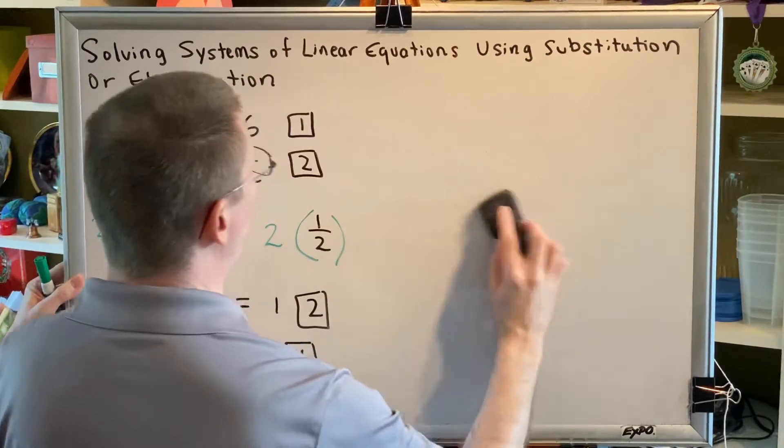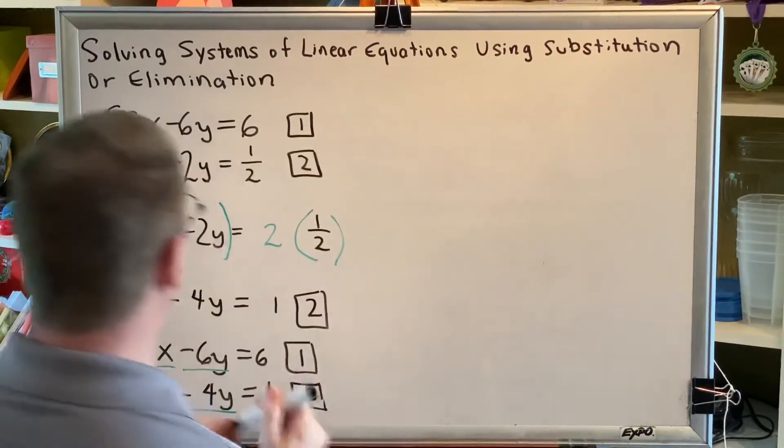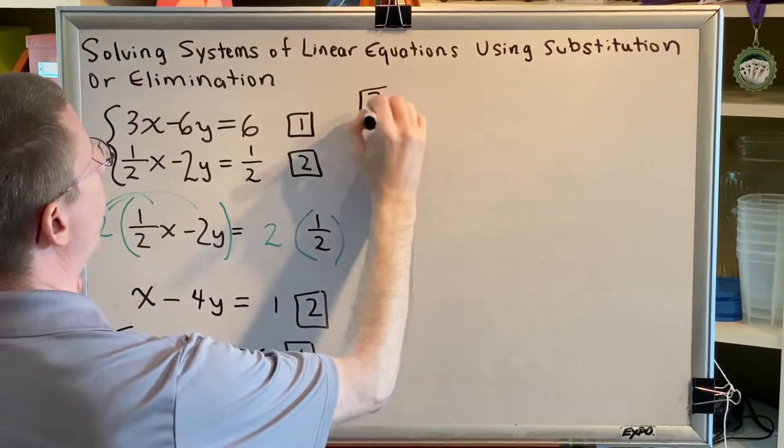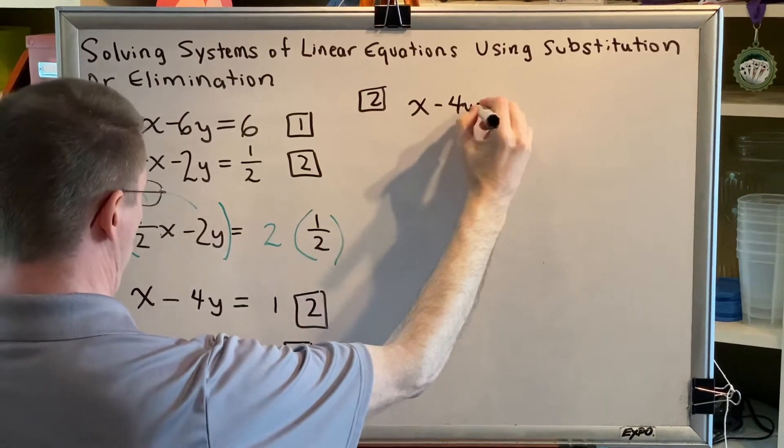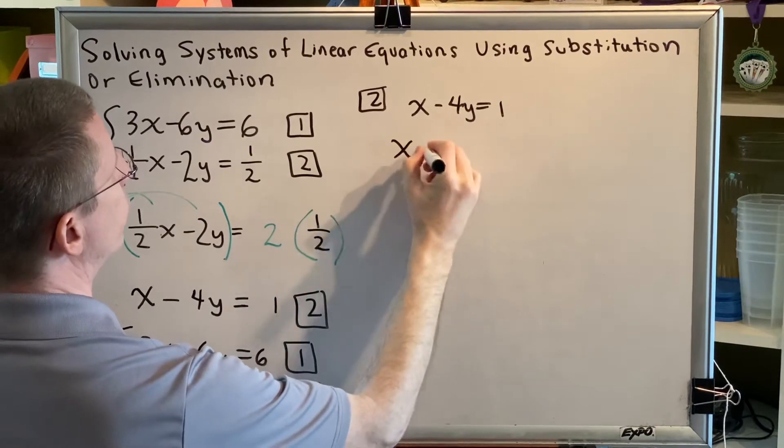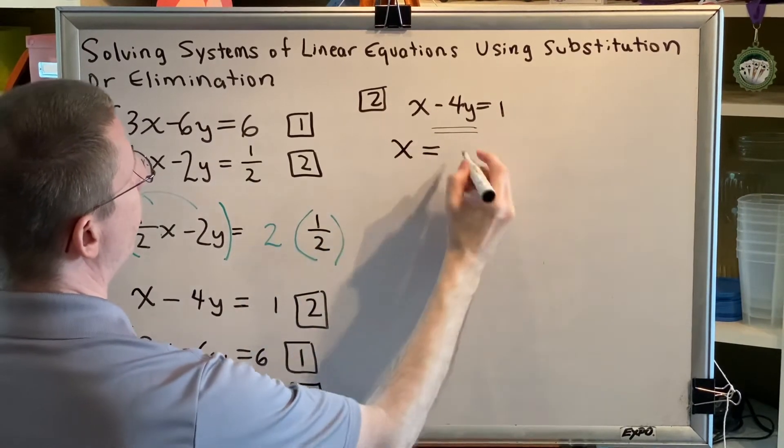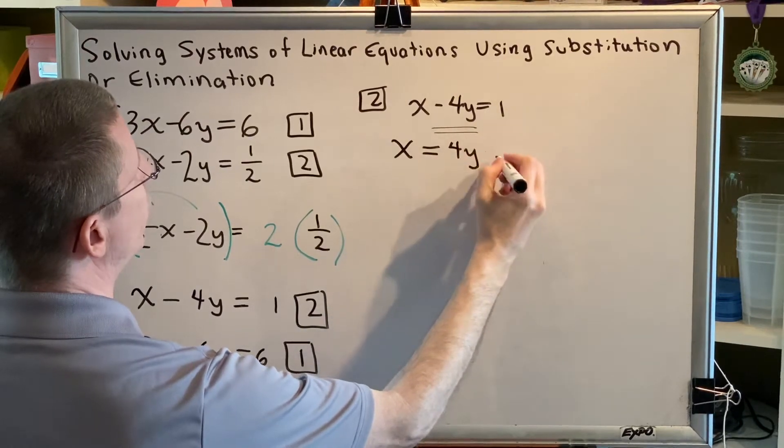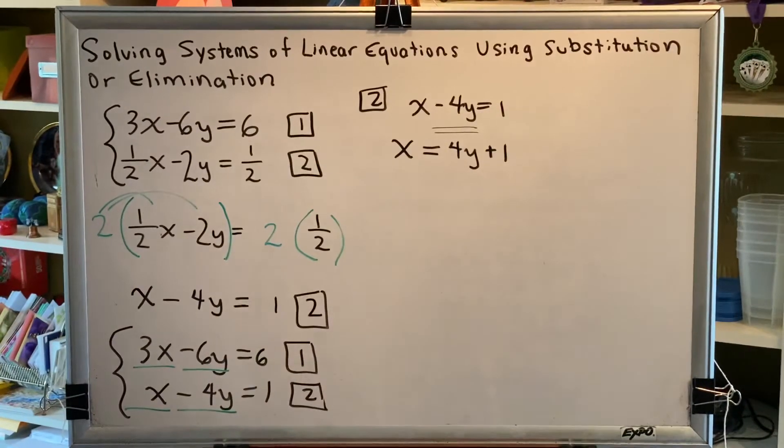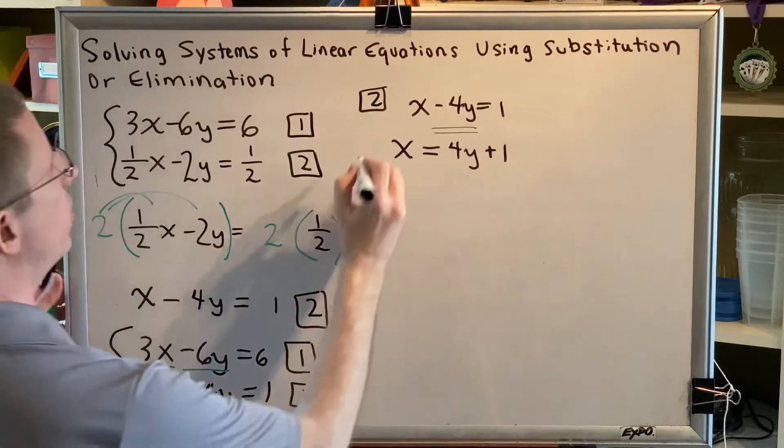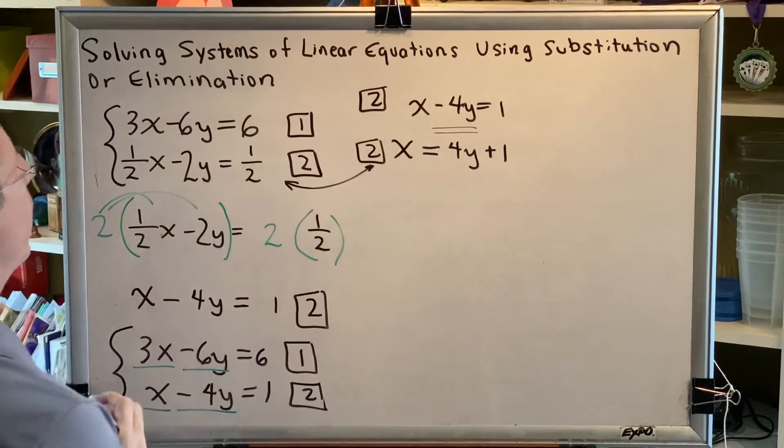And specifically, we're going to solve equation 2 for this x. Equation 2 is x minus 4y equals 1. Solving this for x is very easy. We just move our subtract 4y term to the other side, remembering that when a term changes sides, it changes signs. So now we have x equals positive 4y plus 1. This is still equation 2. We've simply made it look different.